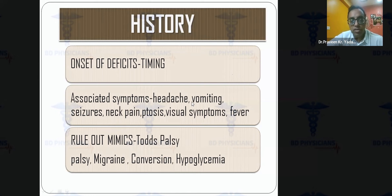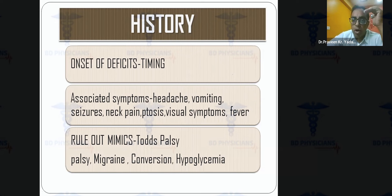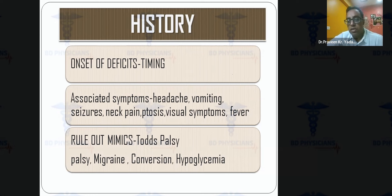Associated symptoms to ask about include headache, vomiting, seizures, and neck pain. Stroke mimics such as Todd's palsy, migraine, conversion disorder, and hypoglycemia must be ruled out. Studies have shown that thrombolyzing a stroke mimic does not significantly increase hemorrhage risk, so if MRI is not urgently available and diagnosis is uncertain, thrombolysis can still be administered.